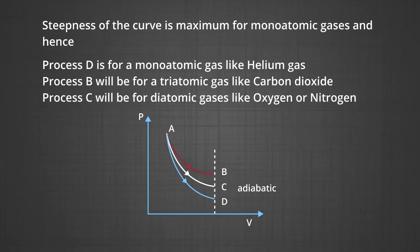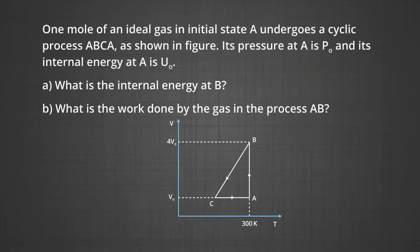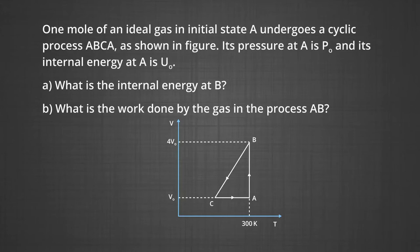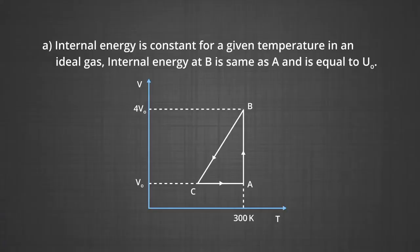The next question is based on a cyclic process. One mole of an ideal gas in initial state A undergoes a cyclic process A→B→C→A as shown in the figure. Its pressure at A is P₀ and its internal energy at A is U₀. We need to find the internal energy at B, and the work done by the gas in process A→B.